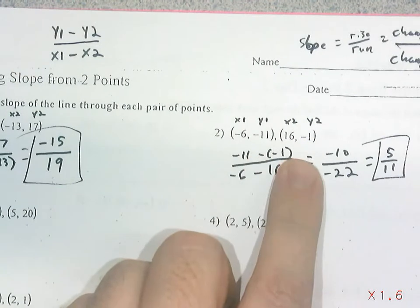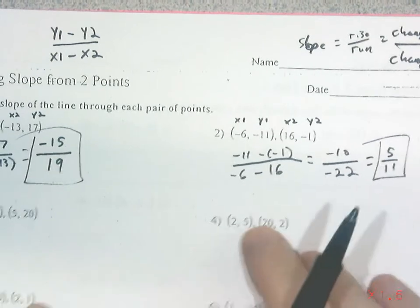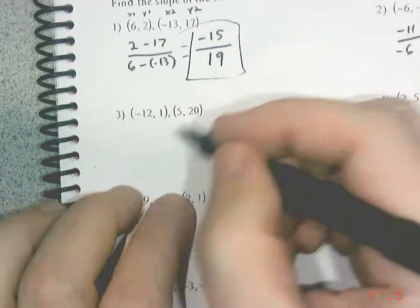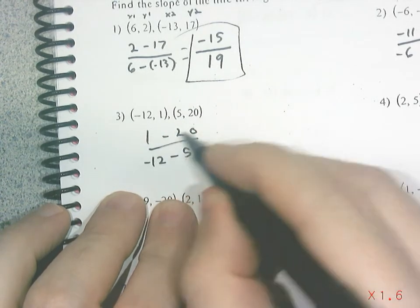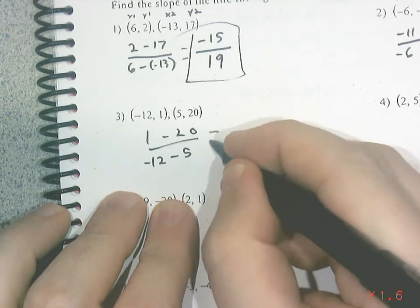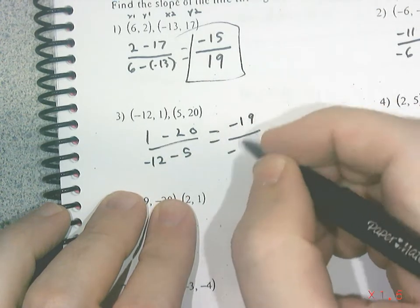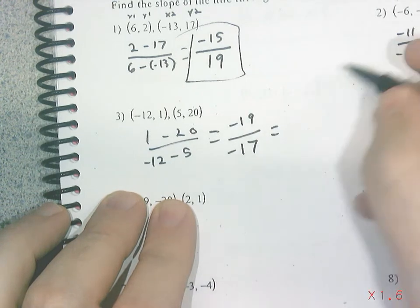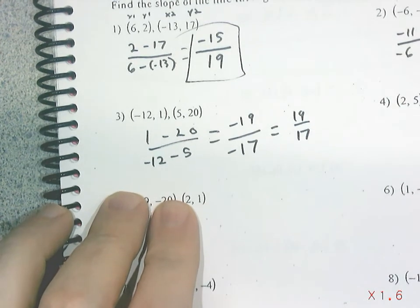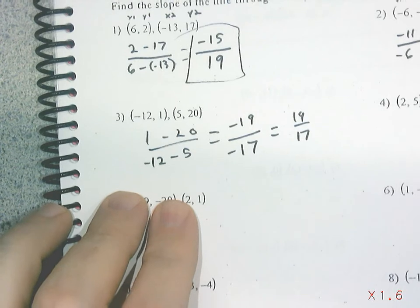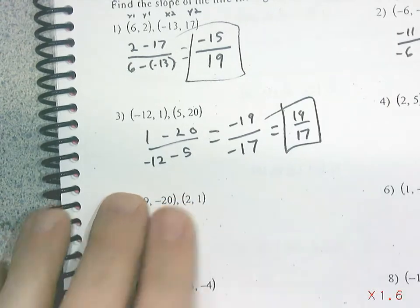One more example with this method: 1 minus 20 over negative 12 minus 5. Two y-coordinates subtracted, two x-coordinates subtracted. 1 minus 20 is negative 19, and negative 12 minus 5 is negative 17. Simplifying, both negatives cancel, giving positive 19 over 17. That's the slope.